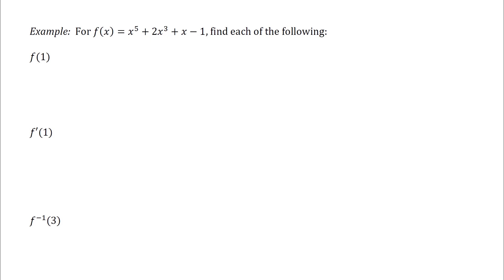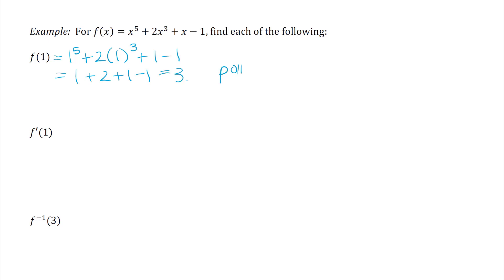Let's look at an example. For f of x equals a given function, the first thing is to find f of 1. Plugging 1 into the original function gives 1 plus 2 plus 1 minus 1, so I get 3. What that means is I have a point 1 comma 3 on the graph of f.